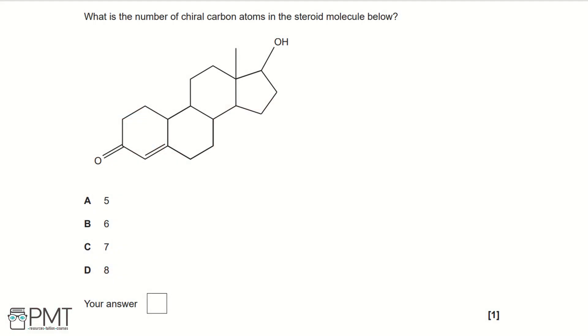What is the number of chiral carbon atoms in the steroid molecule below? A 5, B 6, C 7 or D 8.